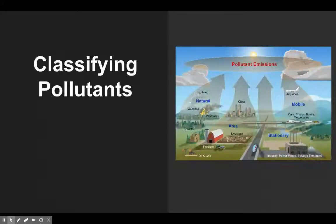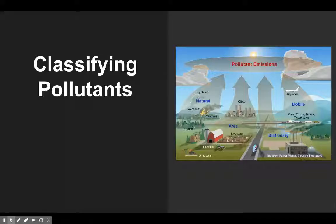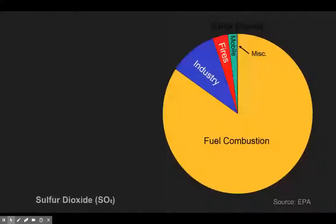To understand the global air pollution system we have to identify the major pollutants and where they come from. The atmosphere is a public resource — a global commons, just as we talked about with the tragedy of the commons. In 1970 the United States developed the Clean Air Act, which identified six pollutants that threaten human well-being, ecosystems, and structures. We're going to look at those six right now.